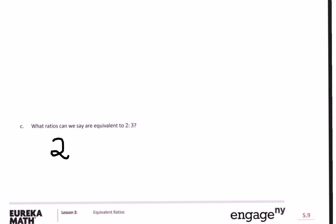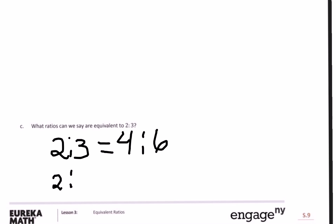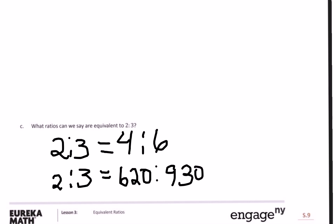The last part asks us to write down the ratios equivalent to 2 to 3. In part A, the equivalent ratio was 4 to 6 — because we multiplied 2 times 2 and 3 times 2 to get 6. In part B, the ratio 2 to 3 was equal to 620 to 930. Note that those are the totals at the end of the tape diagram. Go ahead and try to do the rest on your own.